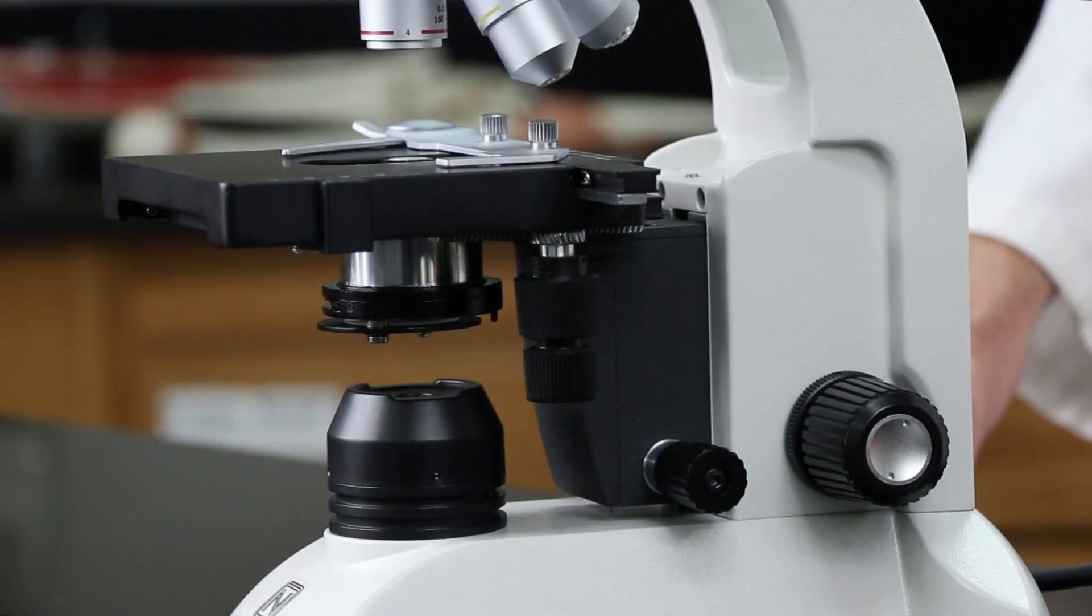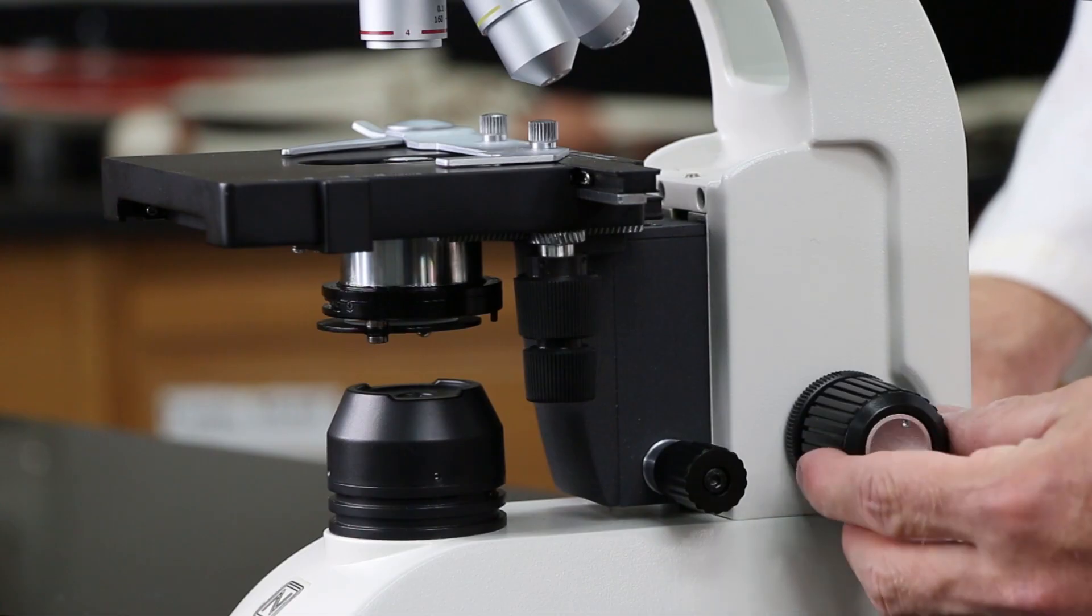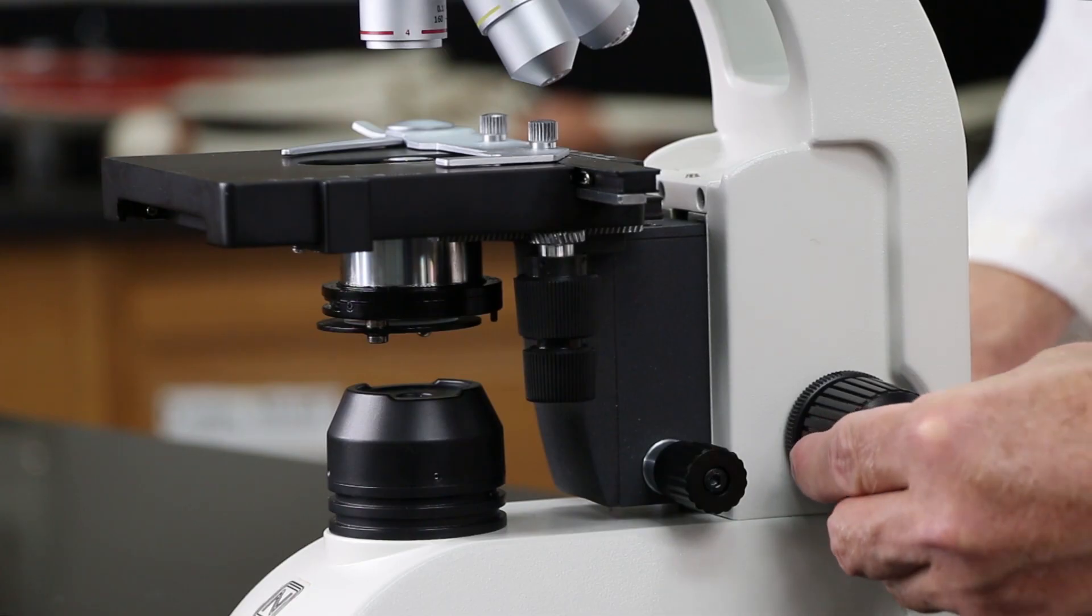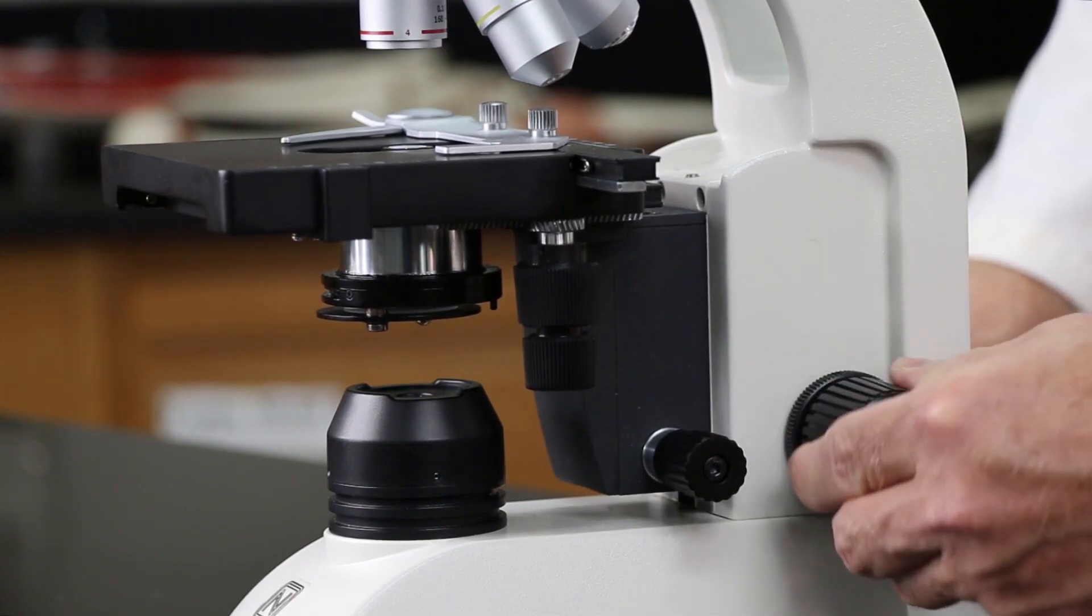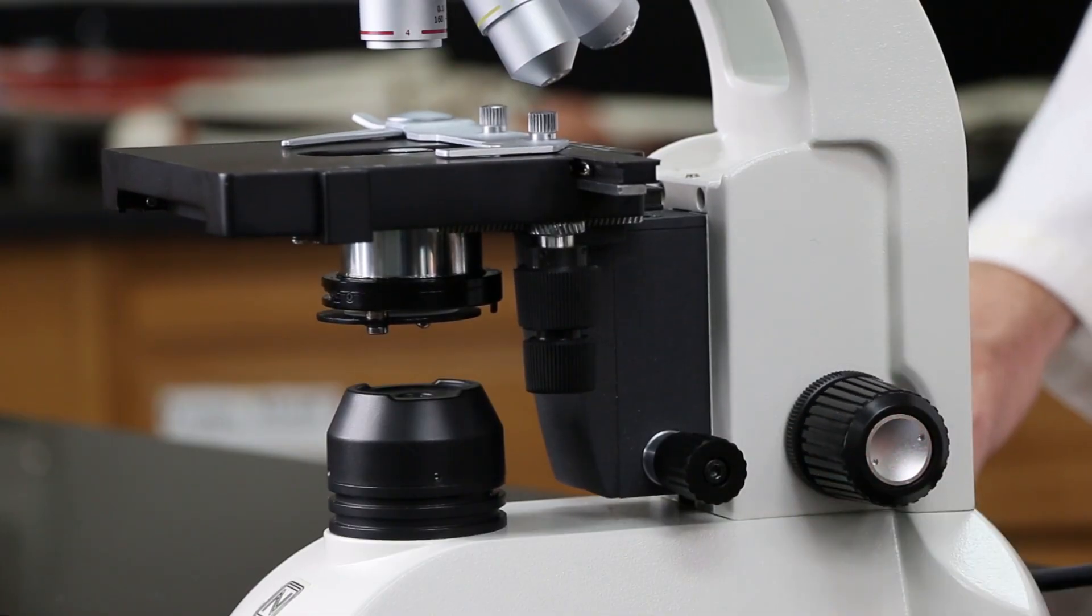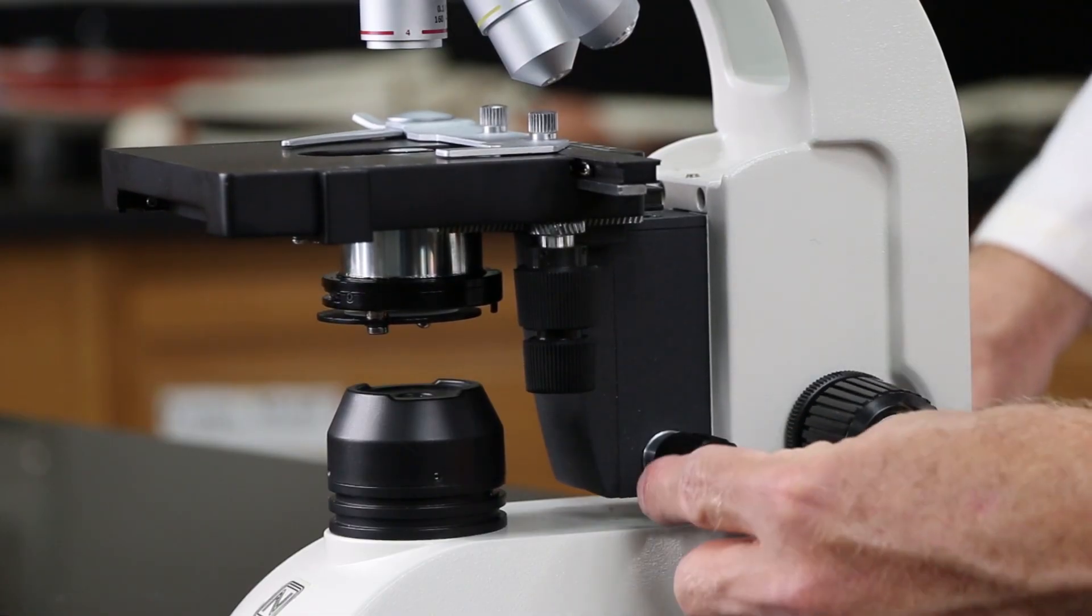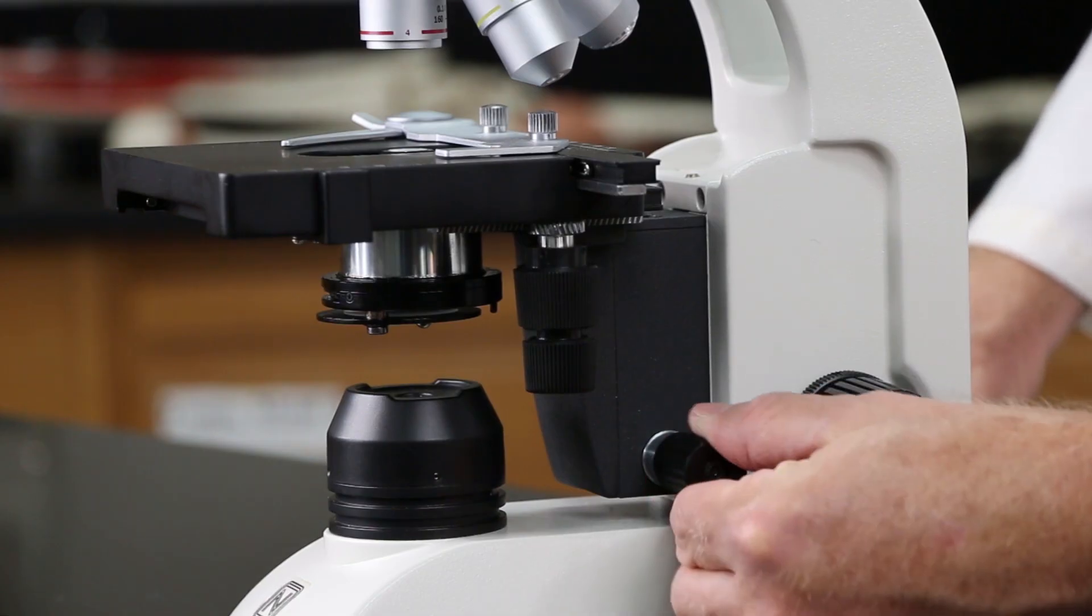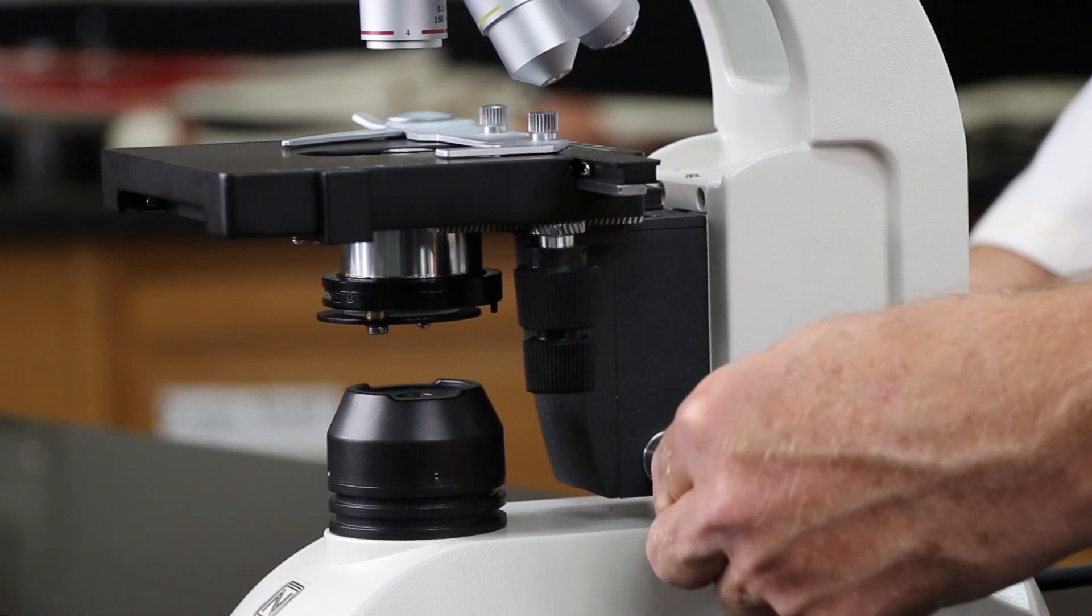These are the two focusing knobs. This large knob right over here is the coarse focus adjustment. And when I turn this, it moves the stage a lot. Now, right in front of it is a smaller knob, that's the fine focus adjustment. I turn that, it moves the stage a little.